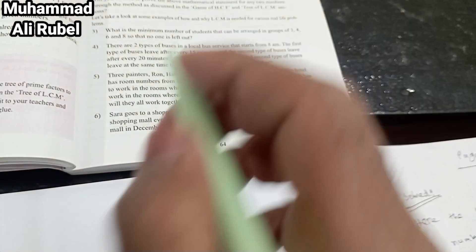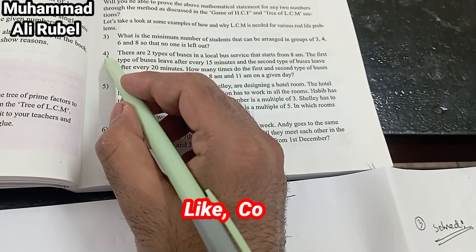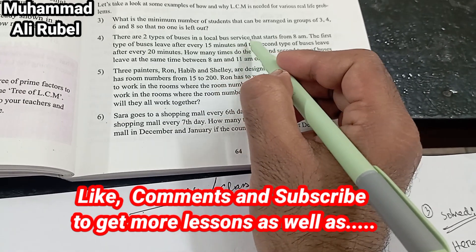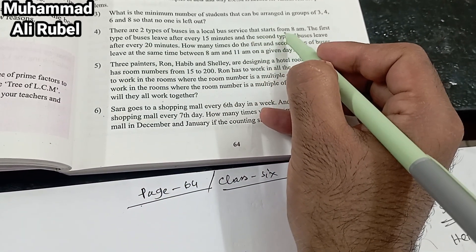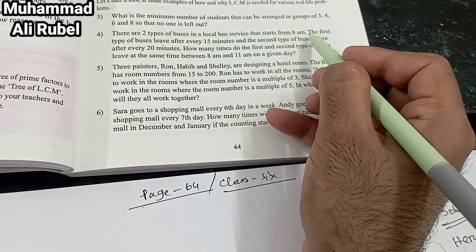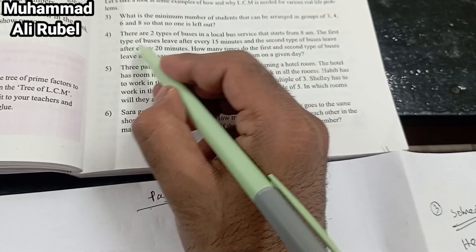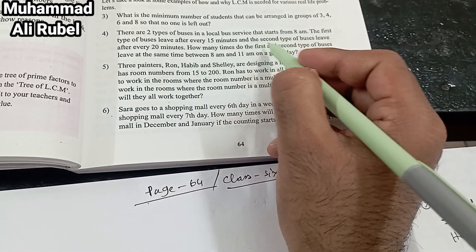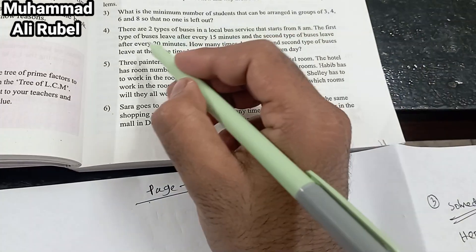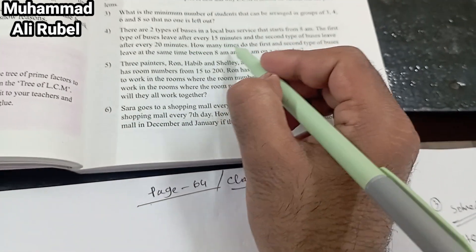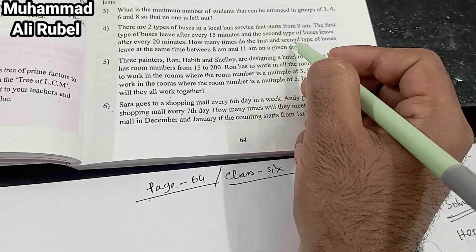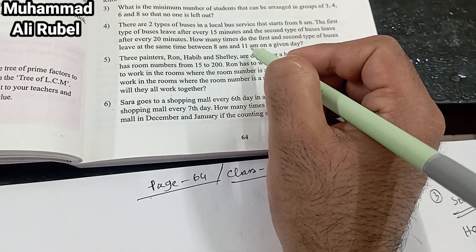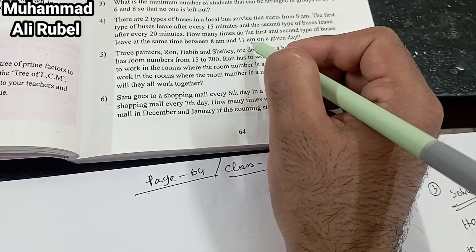Page 64, Classics Math, number 4. There are two types of buses in a local bus service that starts from 8 AM. The first type of buses leave after every 15 minutes and the second type of buses leave after every 20 minutes. How many times do the first and second type of buses leave at the same time between 8 AM and 11 AM on a given day?